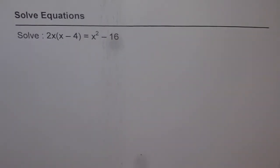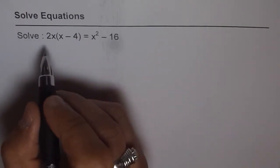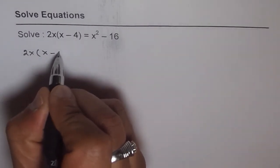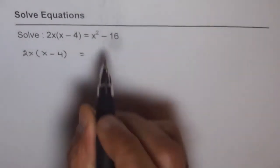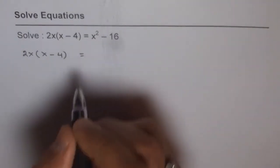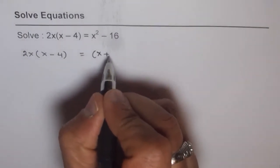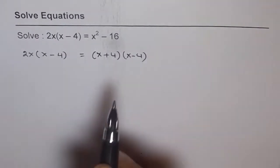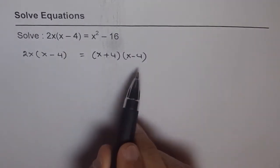Let's try to use factoring techniques which we have learned to solve this equation. So the equation for us is 2x times x minus 4 equals x square minus 16. Now we can factor x square minus 16 and write this as x plus 4 times x minus 4. I hope you remember this. This is difference of squares.